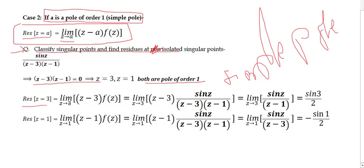Residue at z = 3: limit as z→3 of (z−3) · sin(z)/((z−3)(z−1)). The (z−3) terms cancel, giving limit as z→3 of sin(z)/(z−1). Plugging in z = 3, this equals sin(3)/2.